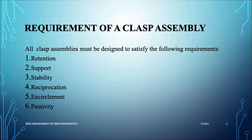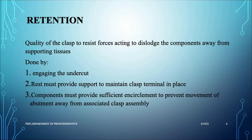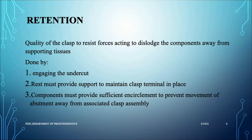There are certain requirements for a clasp assembly to function: retention, support, stability, reciprocation, encirclement, and passivity. Retention is the ability of the denture to prevent itself from dislodging away from the tissue surfaces — preventing it from falling off. The clasp helps by engaging the undercut, which locks into position and prevents the denture from falling down.